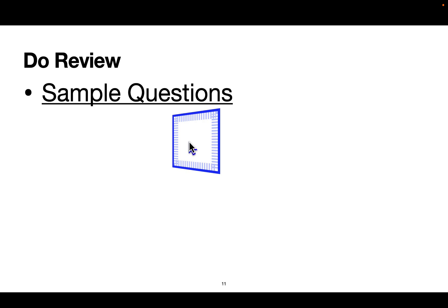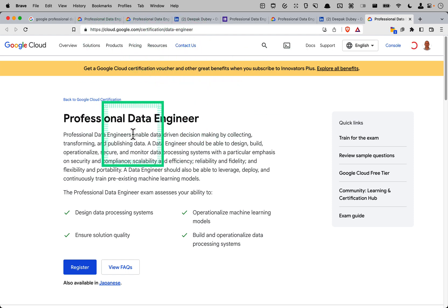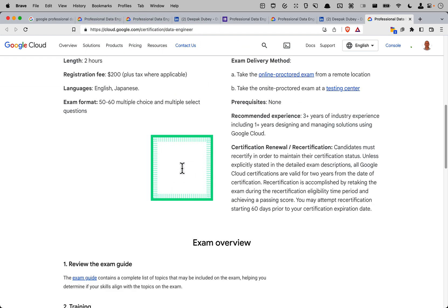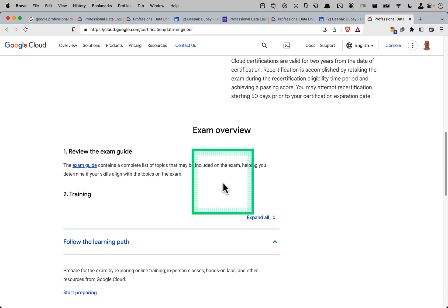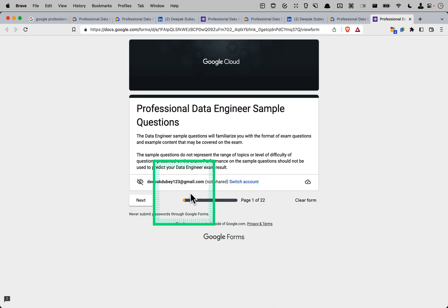Do review the sample questions. If you search, if you go land on the Professional Data Engineer page, there is a sample questions link. If you click that, you can go through 20 sample questions. Please do go through because it will give you a very good idea how difficult the exam is.